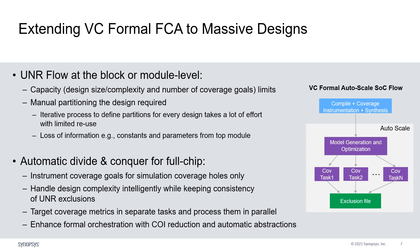VC Formal FCA Autoscale allows reachability analysis at the full chip level by using an automatic divide-and-conquer technique. Instead of partitioning based on block boundaries, partitioning is done based on coverage closure tasks to be performed. Users can control how these tasks are divided. The separate coverage tasks can then be processed in parallel, and the generated exclusion files are combined automatically at the top level. In addition, many advanced convergence techniques such as COI reduction and automatic abstraction are also used to improve Autoscale performance. VC Formal FCA Autoscale is a great feature to further accelerate the coverage closure process.